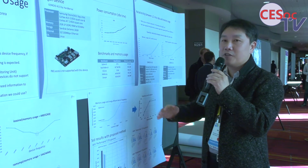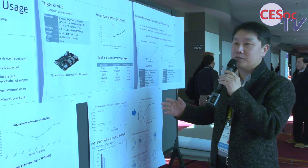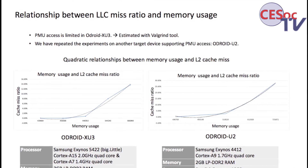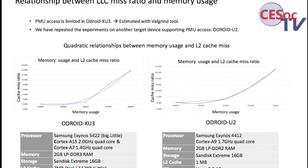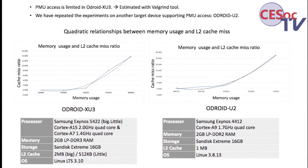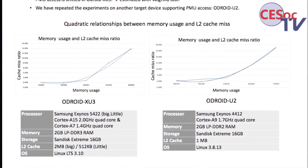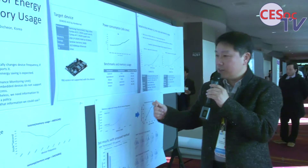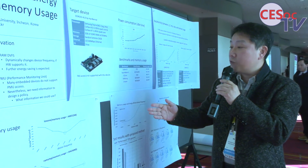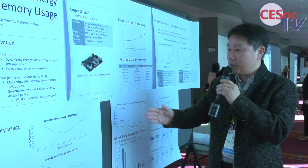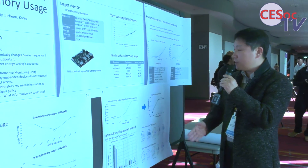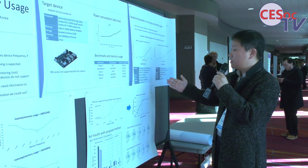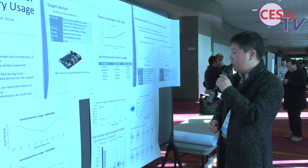We tested several benchmarks with different sizes of memory usage. This information can be obtained from OS-level information, because the operating system manages virtual memory. What we found is that the size of memory currently used is quadratically related with last level cache misses. We then tried to find the optimal frequency selection for DRAM for each memory usage.